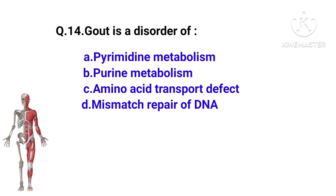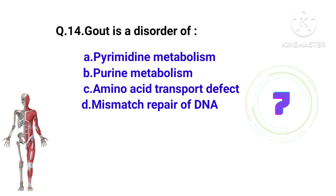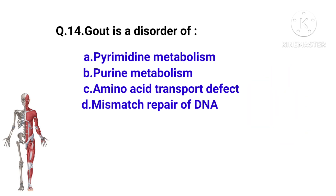Question number 14. Gout is a disorder of: pyrimidine metabolism, purine metabolism, amino acid counts, or mismatch repair of DNA? Gout is a disorder of purine metabolism.